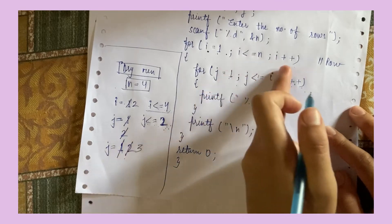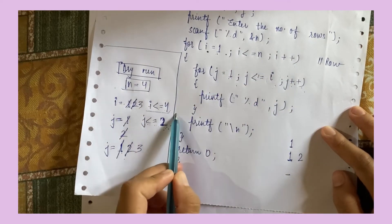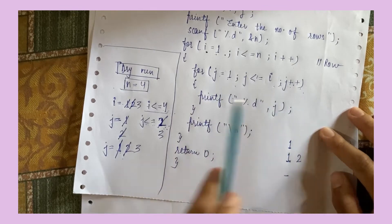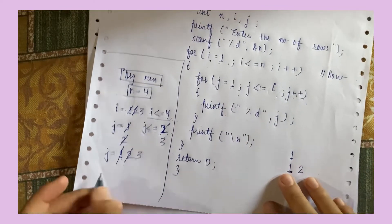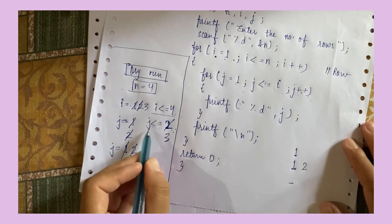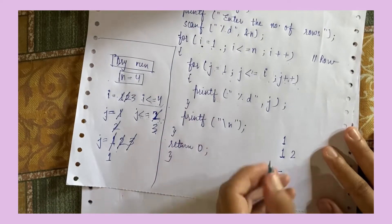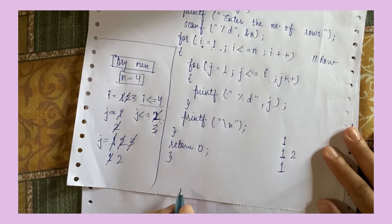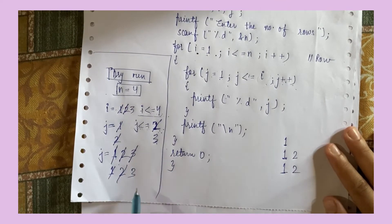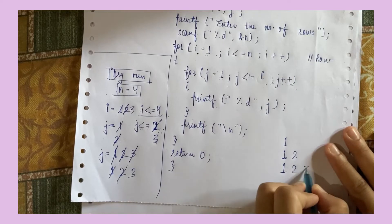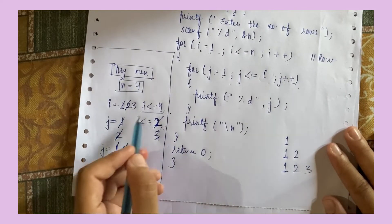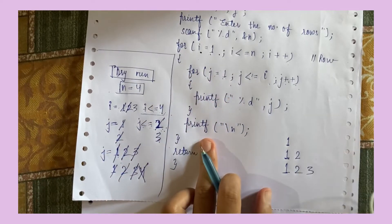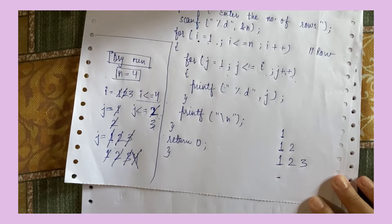Again the outer loop runs. I will be 3. 3 less than or equal to 4 — condition true. J starts from 1 again. 1 less than or equal to 3 — condition true — 1 will print. J increments to 2. 2 less than or equal to 3 — condition true — 2 will print. Then J is 3. 3 less than or equal to 3 — condition true — 3 will print. Then J becomes 4. 4 less than or equal to 3 — condition false — 4 will not print. It will come out of the loop and the cursor will go to another line.